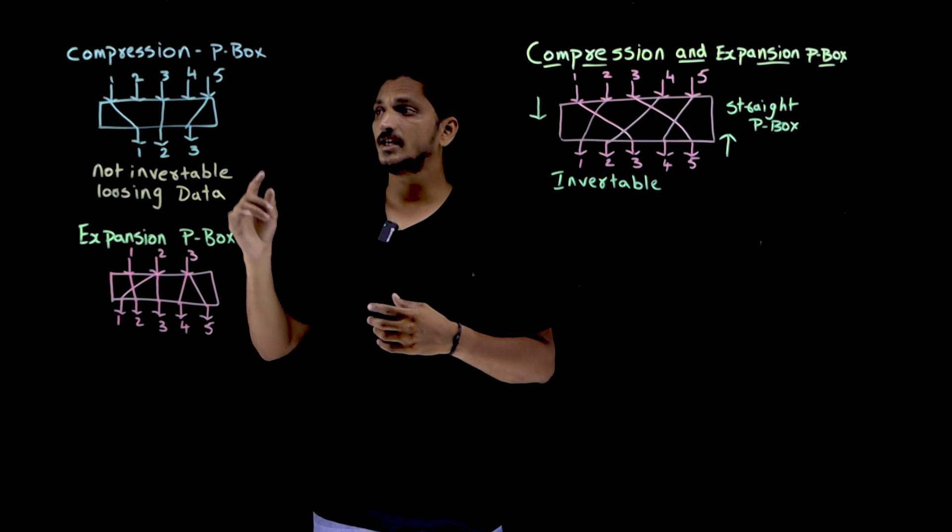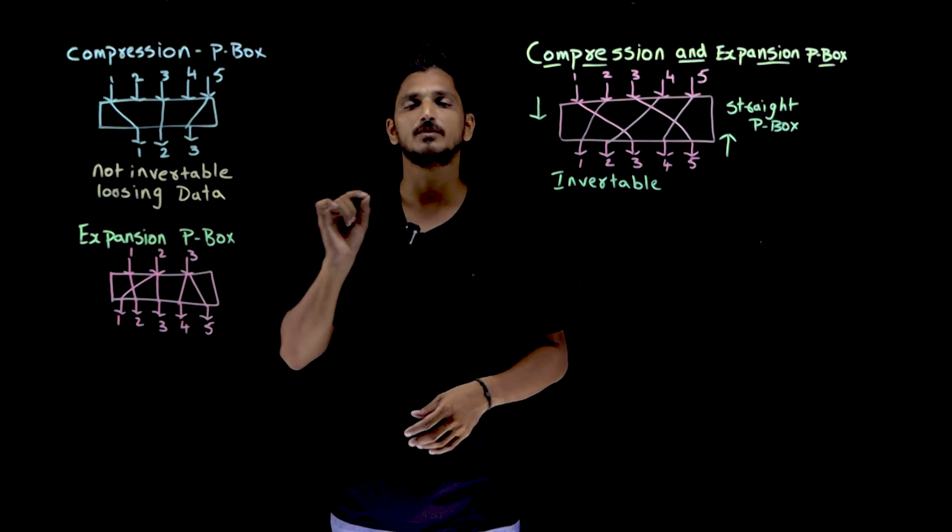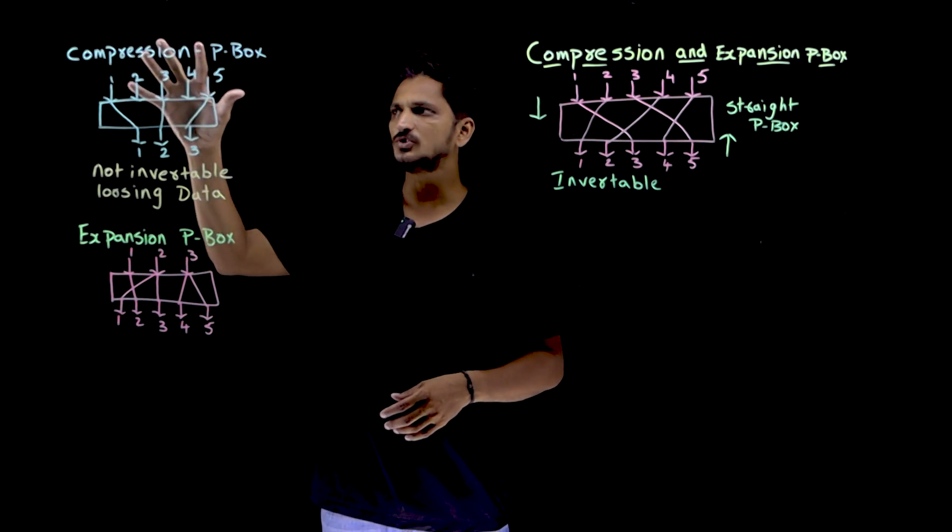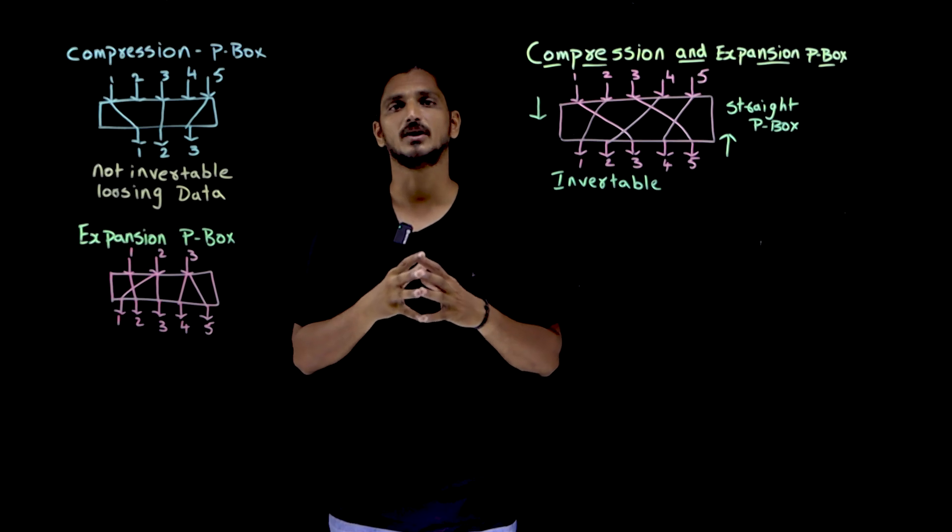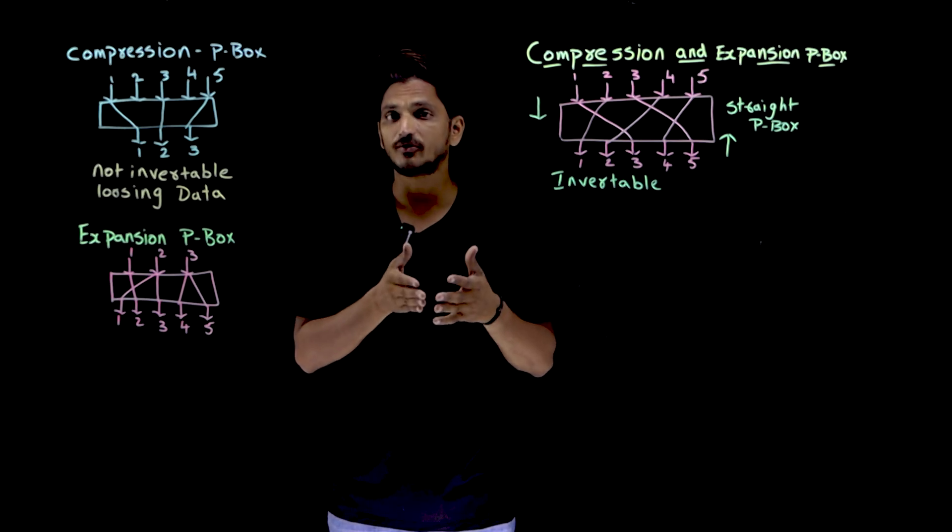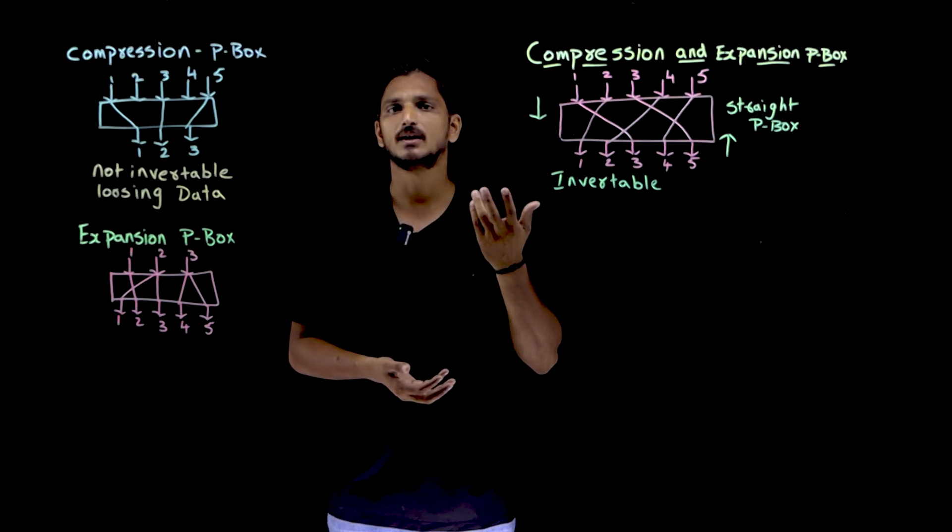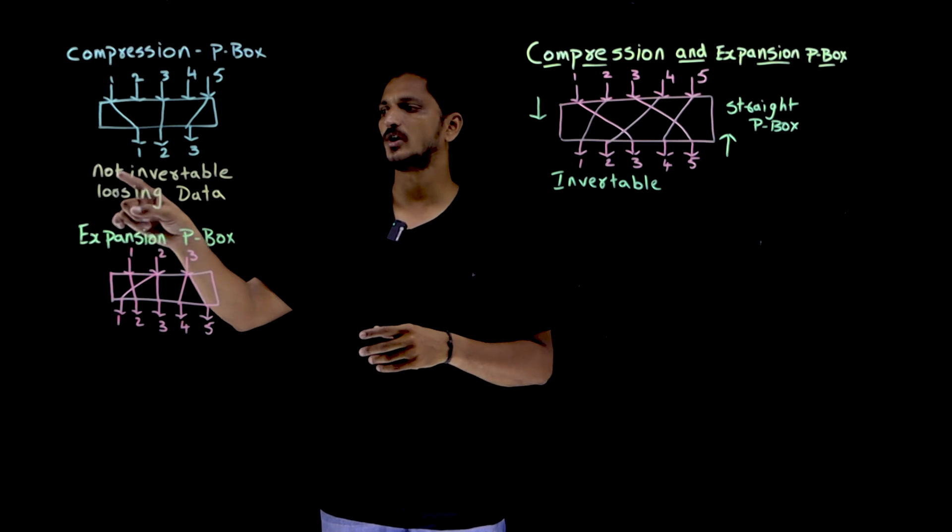The point you need to understand here for compression P-Box means it is non-invertible. Means once you encrypted the data, you are losing some information. There is no way to get that lost information again. So you are not able to decrypt it. That is the point you need to understand. Not invertible.